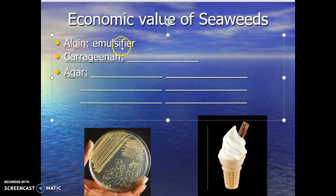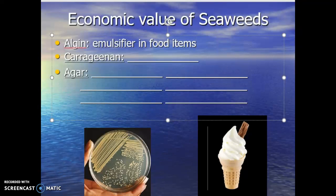Seaweeds can be boiled down and turned into a variety of different products. One of the products is algon. Algon, when it's boiled down and extracted, is used as an emulsifier in a lot of different food items. An emulsifier is a thickening agent — something like a Dairy Queen ice cream cone. To make that product thicker so the components of the ice cream bond together and give you that nice swirl, algon is often used. We can see it in a variety of other products we use on a daily basis.